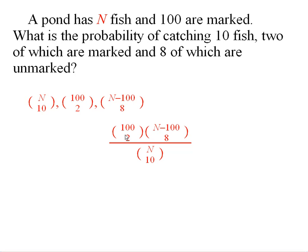Another thing that we can observe from this is that if you were going to catch 10 fish, you could either have 0 marked fish, 1 marked fish, 2 marked fish, all the way up to 10 marked fish. And those would exhaust all of the possibilities. Therefore, we can conclude the following sum.